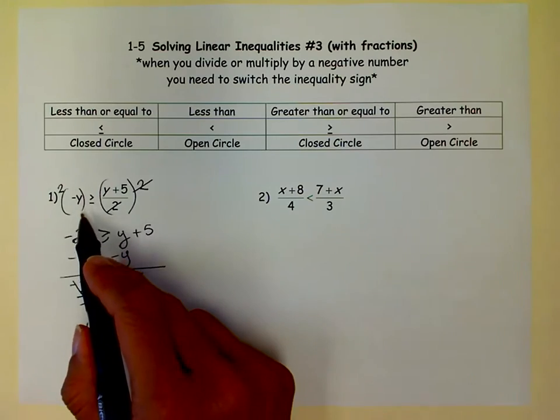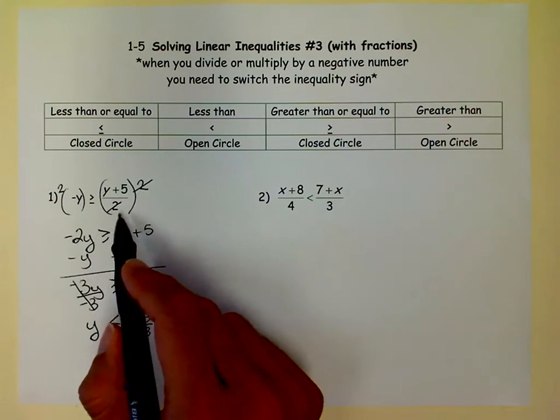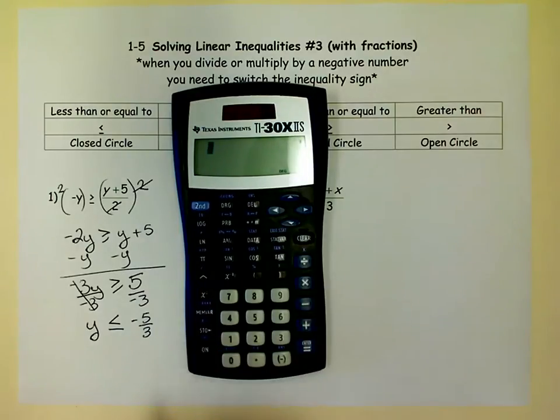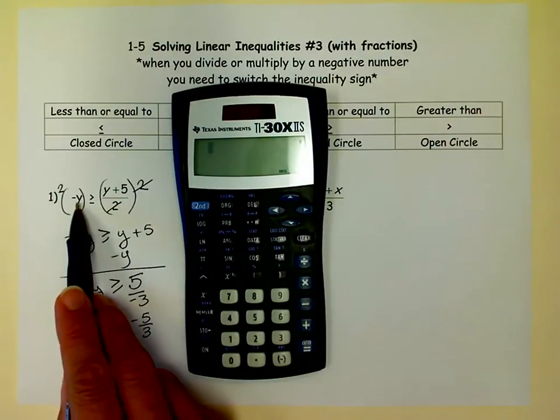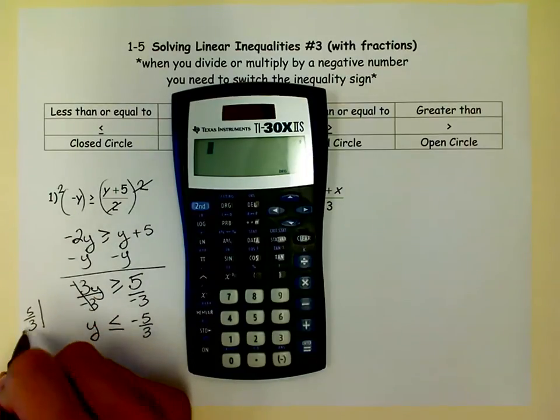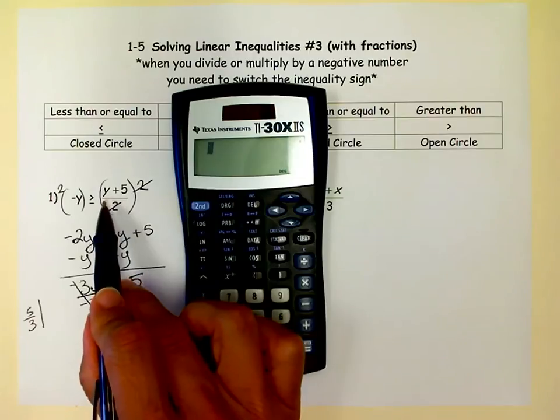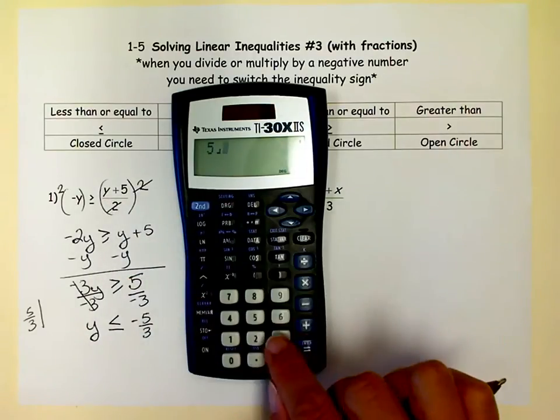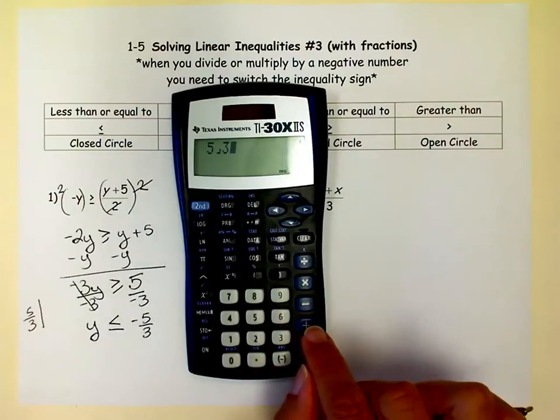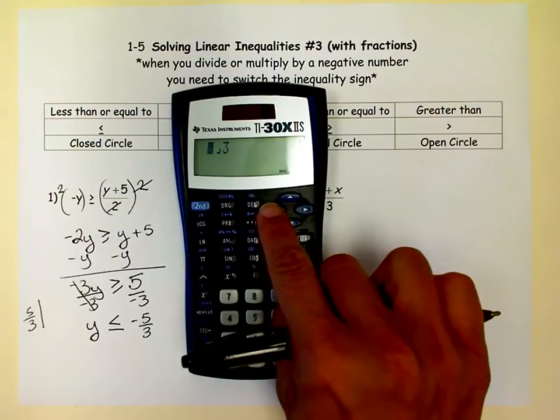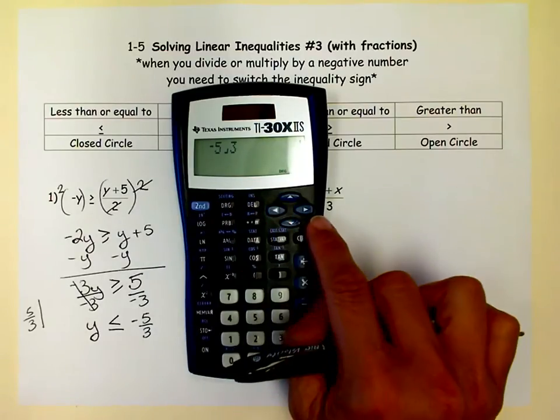Now if you put negative 5 thirds in there, you should get the same thing on both sides. It's always a good idea to check. So real quick, if I put a negative 5 thirds in for that Y, a negative negative 5 thirds is a positive 5 thirds. So on the left side, I'm getting 5 thirds. Let's put a 5 thirds in there. And I'm going to show you how to do that in the calculator if you don't like adding fractions without a calculator. It's a little bit easier and I forgot my negative sign. So let's insert a negative right there.